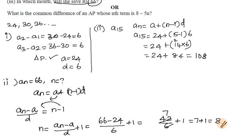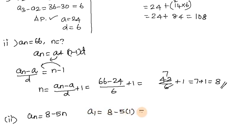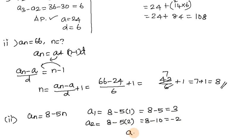Whose nth term is 8 minus 5n. Find the common difference. So An equals 8 minus 5n. First term A1 equals 8 minus 5 into 1 equals 3. Second term A2 equals 8 minus 5 into 2 equals minus 2. Common difference equals second term minus first term equals minus 2 minus 3 equals minus 5.